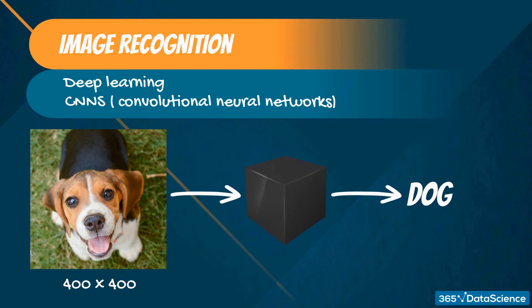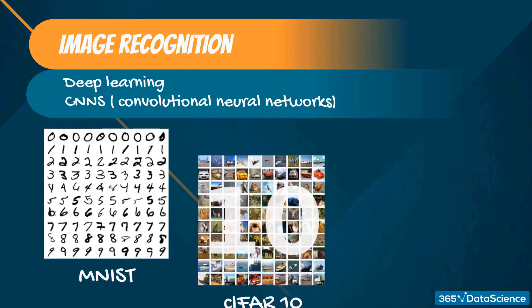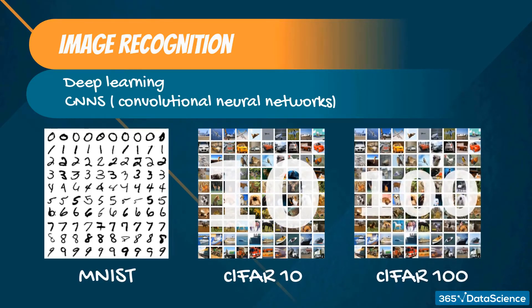Famous examples are the MNIST dataset, where the task is to classify handwritten digits, CIFAR-10, where the task is to classify animals and vehicles, and CIFAR-100, where you have 100 different classes of images.